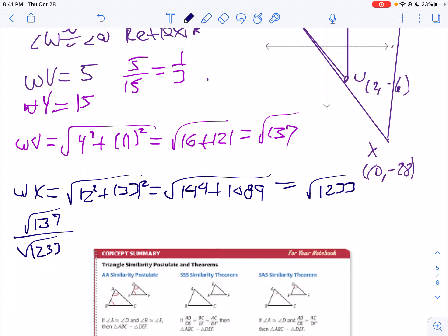Well, 137 and 1233. I wonder if they have any common factors here. And I get the square root of 1 to the square root of 9. Because 137 goes into 1233 nine times. Well, the square root of 1 is 1. The square root of 9 is 3.